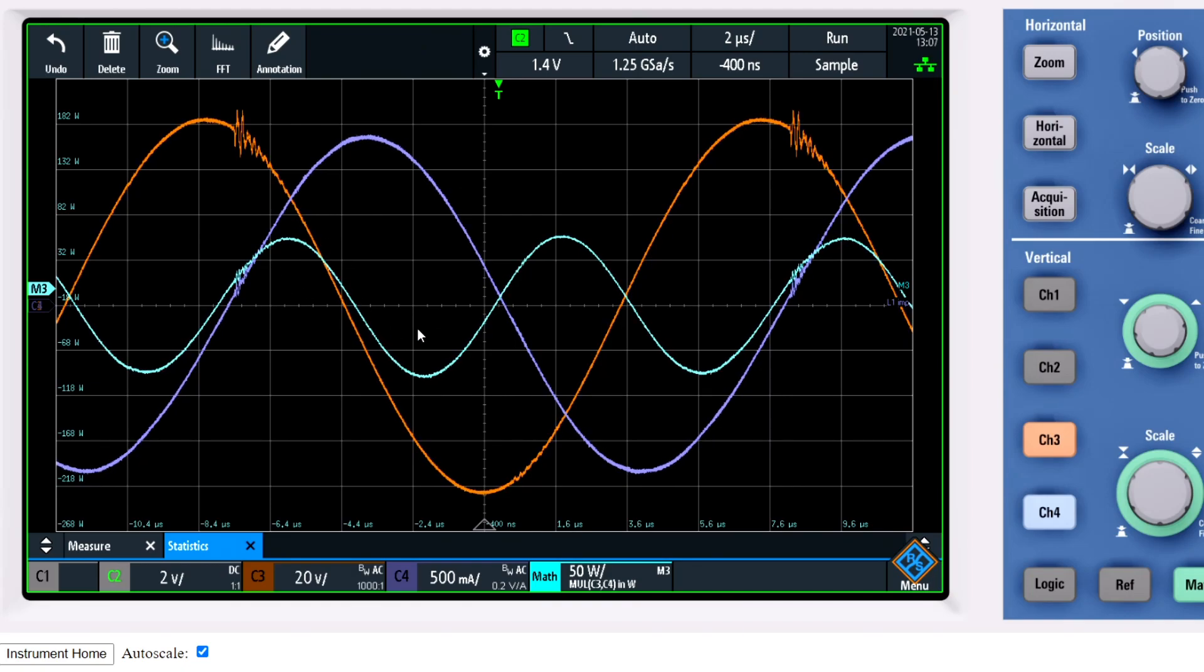At twice the frequency of the resonant system. So this maximum on the voltage is one cycle. And if you go to the power we have one, two cycles. So the power frequency is an octave higher than the resonant frequency of the system.